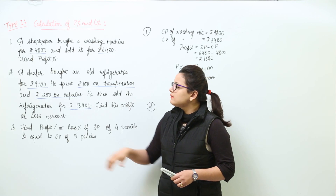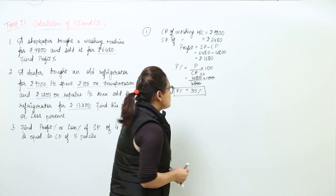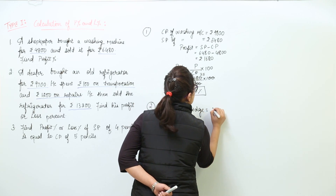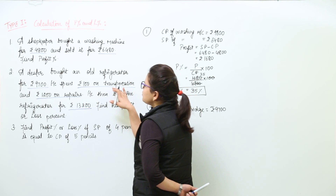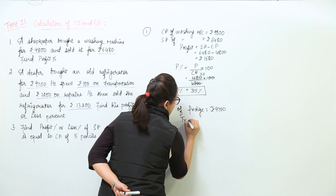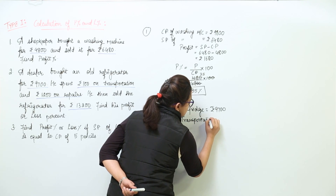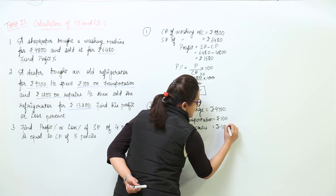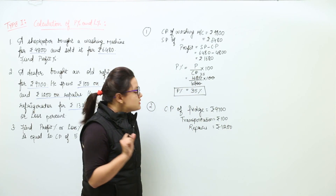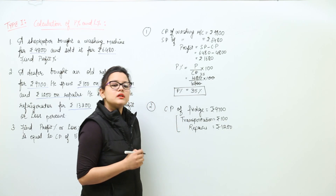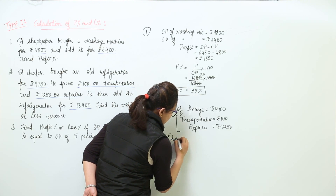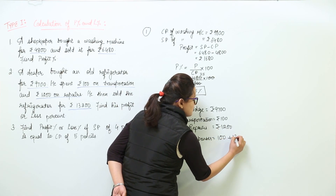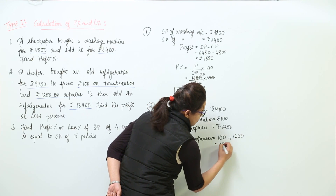We write: CP of fridge equals rupees 9700. Transportation charges equal rupees 100, and repair charges equal rupees 1200. Transportation and repairs come under overhead expenses, so overhead expenses equal 100 plus 1200, which is rupees 1300.